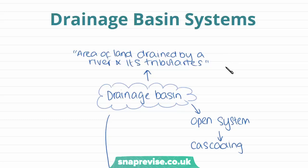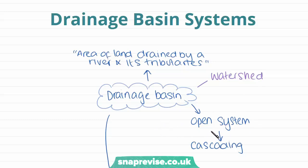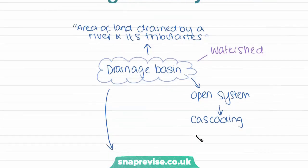Now that we've learnt how water is transferred between its different stores, we're going to look at an example: the drainage basin system. A drainage basin is an area of land drained by a river and its tributaries, and the border around a drainage basin is called a watershed, which essentially just marks the boundary of the drainage basin. Drainage basins are open systems, meaning energy and matter can transfer in and out of the system — water can come from outside the drainage basin through the movement of clouds. There's also a cascading system, where the inputs and outputs of one open system within the drainage basin flow into the inputs of another system.